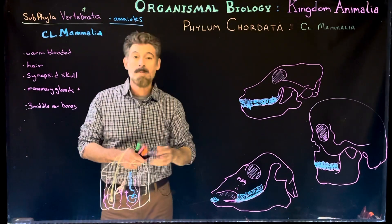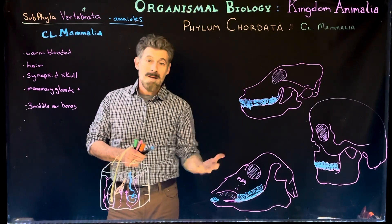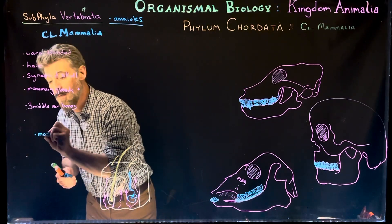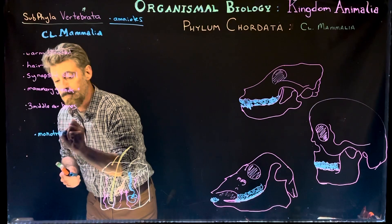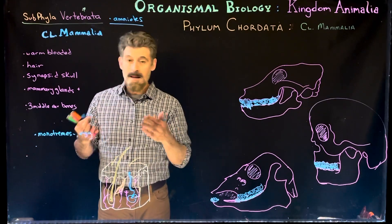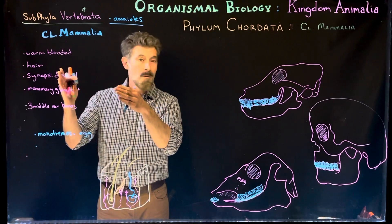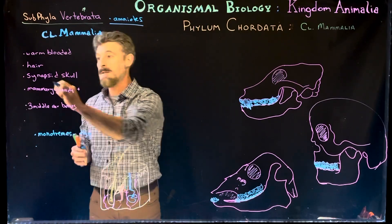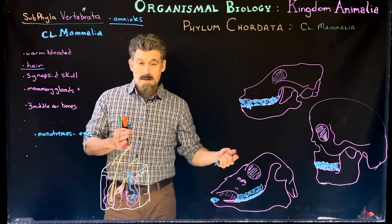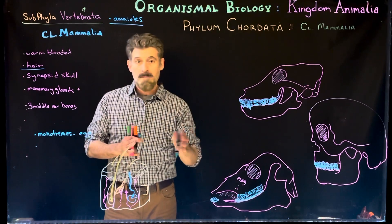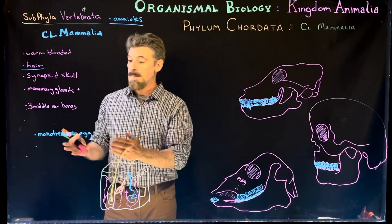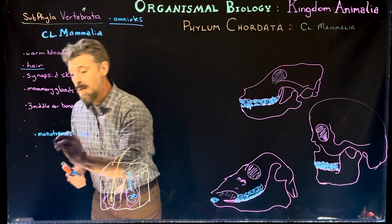Amniotes, like birds and reptiles, lay eggs. Mammals can also lay eggs — we have a group called monotremes, like the duck-billed platypus, which is a mammal. We'll go over the specific features that make it a mammal. For example, mammals have hair. Reptiles have scales, birds have feathers — these characteristics are specific to each group. We also have marsupials.